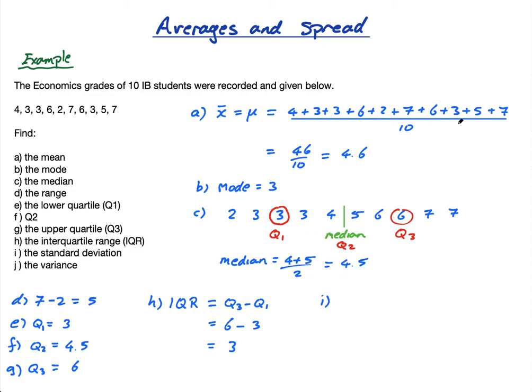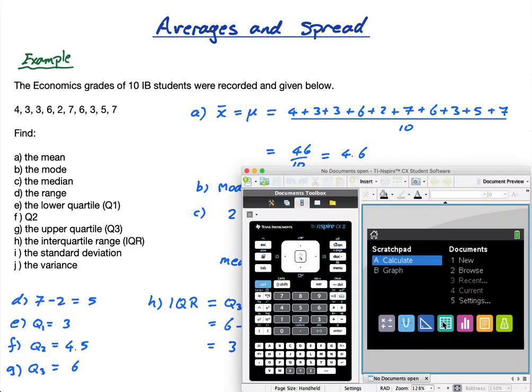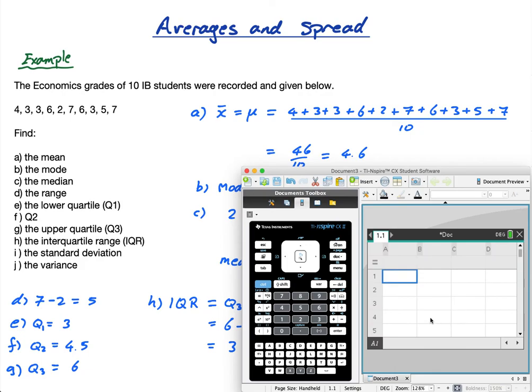So I'm just going to find these with the calculator. And while I'm at it, I'm going to show you how we can find all the rest of them with the calculator. I'm going to open this spreadsheet. Let's name this X, or you can even call it grades. Now I'm going to put in the numbers. You don't have to put them in order. So it's 4, 3, 3, 6, 2, 7, 6, 3, 5, 7.